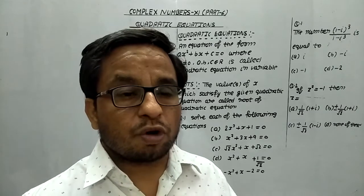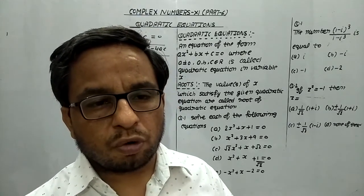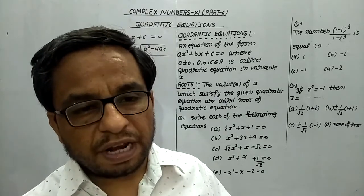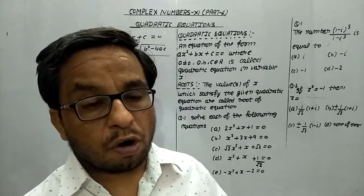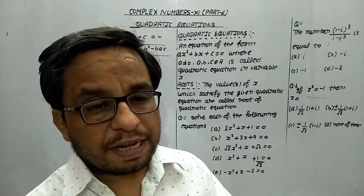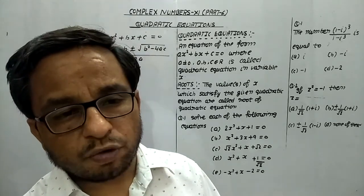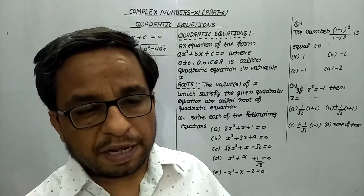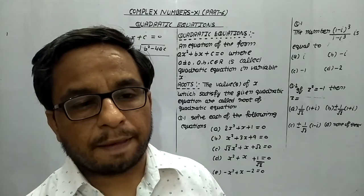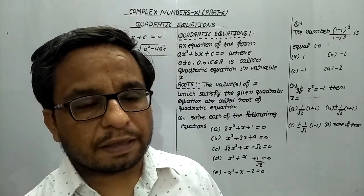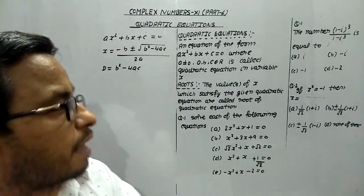If D > 0, roots are real and unequal. If D = 0, roots are real and equal. And if D < 0, roots are not real. In 10th class, you were not doing the calculation when D was less than zero. Here, in all questions, normally you are going to get D < 0. In place of √(−1), you write i. That's why here we will get imaginary roots. The rest of the procedure is the same as what you did in 10th class.